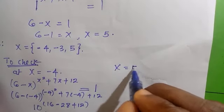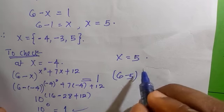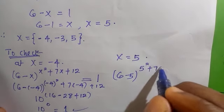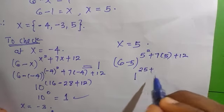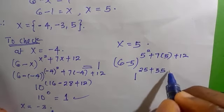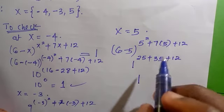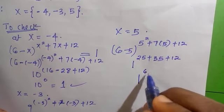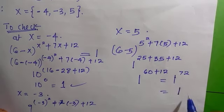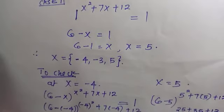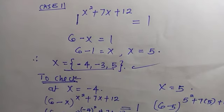For x = 5, we have (6 - 5)^(5² + 7(5) + 12) = 1^(25 + 35 + 12) = 1^72 = 1. Since 1 to any power equals 1, x = 5 also satisfies the equation. All three roots satisfy the problem. Thanks for watching — please don't forget to subscribe for more. See you in the next class!